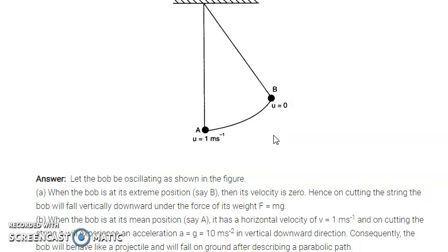When the bob is in the extreme position and the string is cut, velocity is zero. Then the only force acting is gravity, F = mg downward, so acceleration a = g = 10 m/s² downward. When the string is cut at the mean position, the bob has velocity 1 m/s and then accelerates downward at g = 10 m/s².